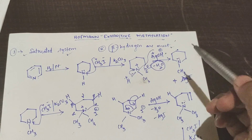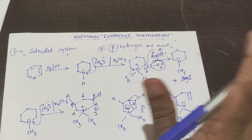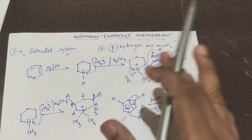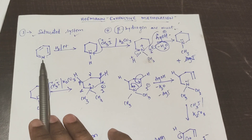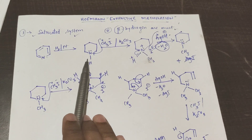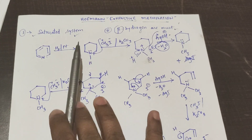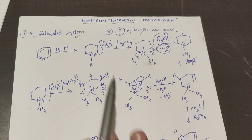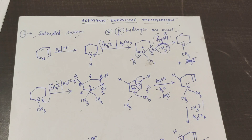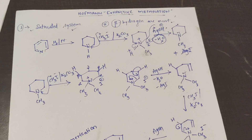You cannot do Hofmann Exhaustive Methylation on an unsaturated system or on a system that does not have a beta hydrogen. Overall, first what we do is remove the hydrogen attached to the nitrogen, then we remove the hydrogens at the beta position. This is the Hofmann degradation method — one degradation method of alkaloids.